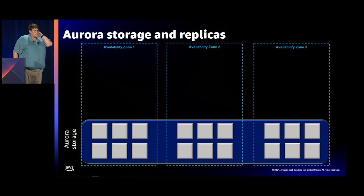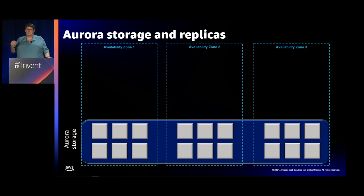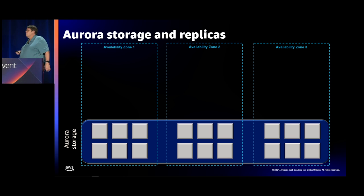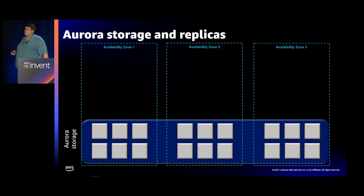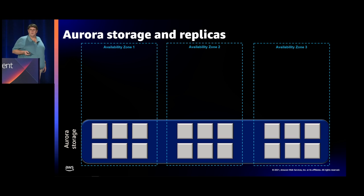We always have a picture with a couple of blocks, but it's a misrepresentation of what's actually happening. Behind the scenes, each one of those blocks is tens to hundreds of servers. We spread your storage out across three availability zones, across hundreds to thousands of servers. We store your data in 10-gigabyte segments across that fleet with six copies of your data spread across those three availability zones — that's one of the reasons we can claim such high durability numbers for Aurora.